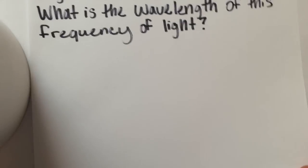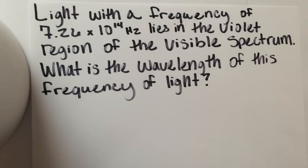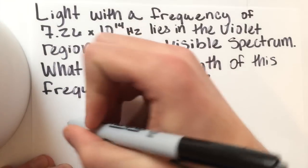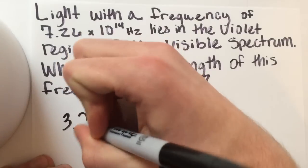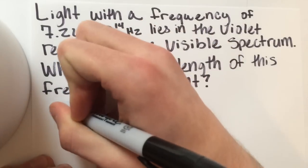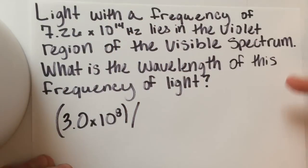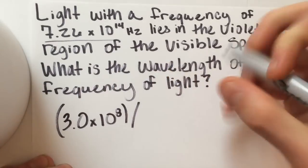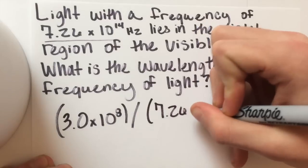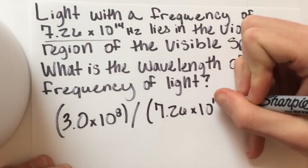So since we know what we're doing now, let's actually do it. We're going to divide the speed of light by our frequency that we were given. So the speed of light is 3.0 times 10 to the 8th. And we're going to divide that by our frequency, 7.26 times 10 to the 14th.